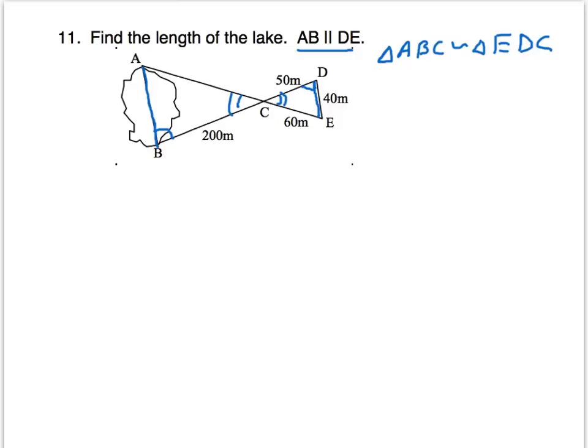Let's call that length x. I know that the length AB corresponds with the first two letters of the second triangle, ED. There's our unknown ratio.